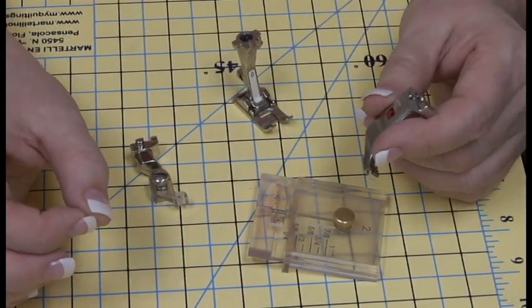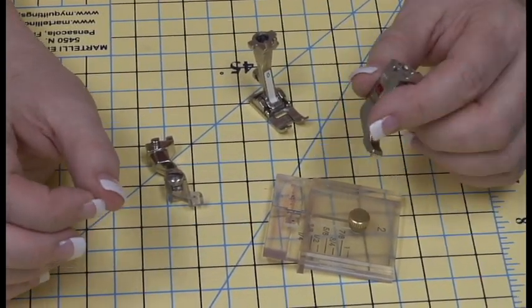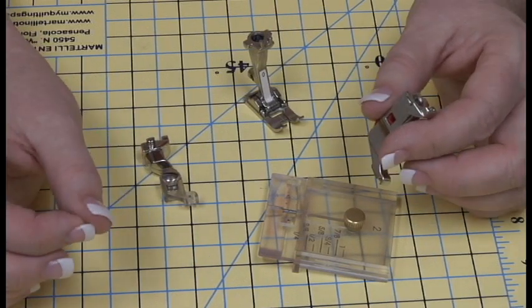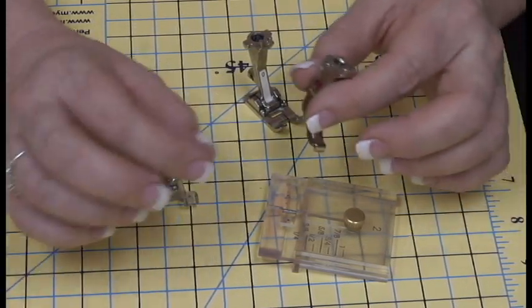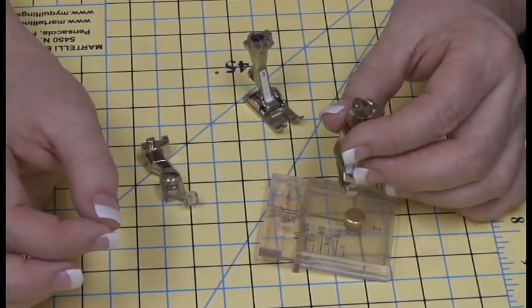Pfaff, Viking, and Bernina—they're what I call not playing well with others. That means you can never interchange those feet on any other machine. We'll talk about those in particular videos as well.